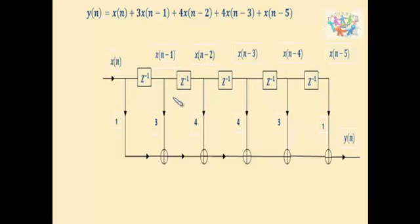Now for the direct form 1, all you have to do is write all the delay elements. Over here we have 5 delay elements so draw that and similarly 5 adders, and you write all the coefficients: the 1, 3, 4 which belongs to x of n minus 1, x of n minus 2.